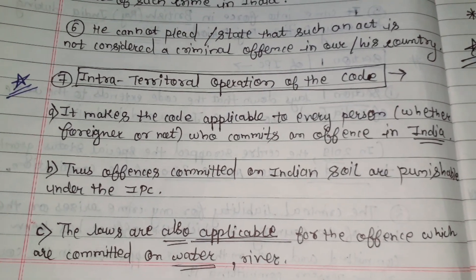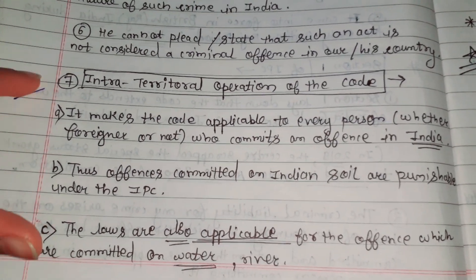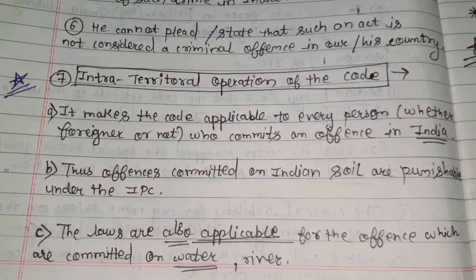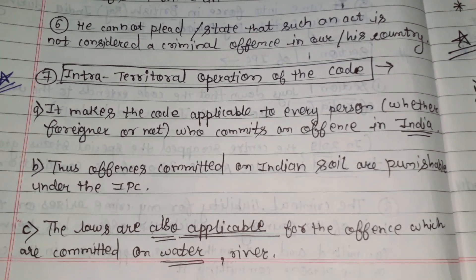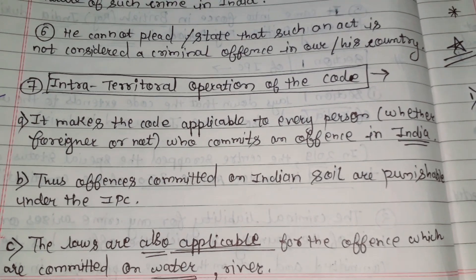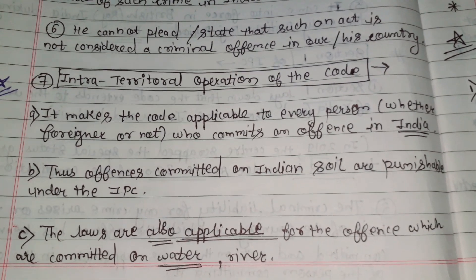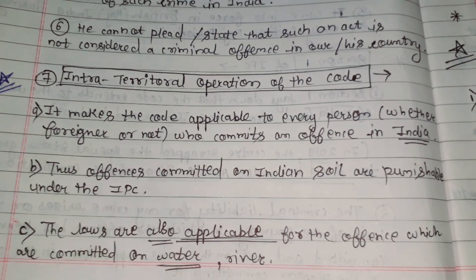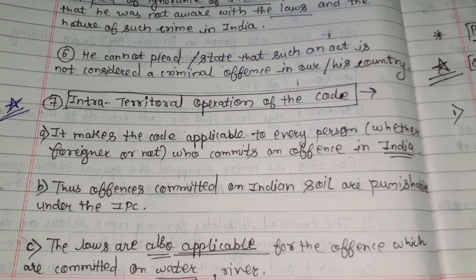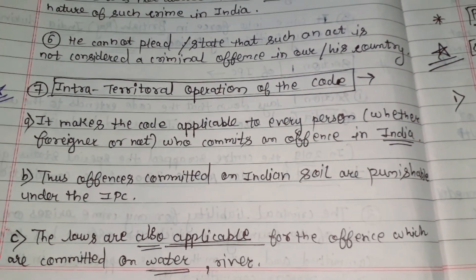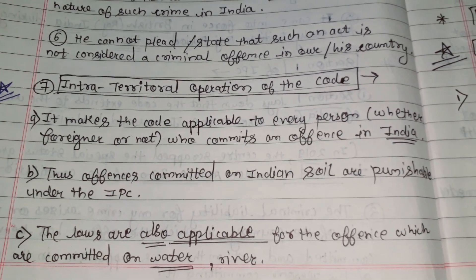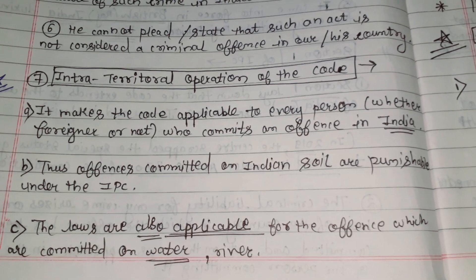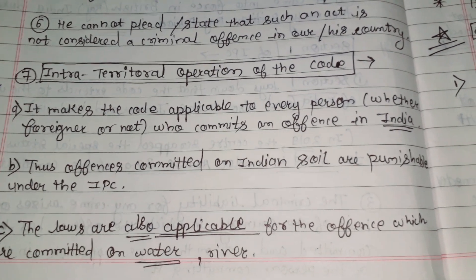Here we will see some important topics. First of all is the intra-territorial operation of the code. Intra-territorial means this code is applicable to every person, whether that person is a citizen or a foreigner. Those offenses which are committed within the area of India, or which are committed on the Indian soil, are punishable under the IPC. This law also applies to offenses committed on water and rivers.